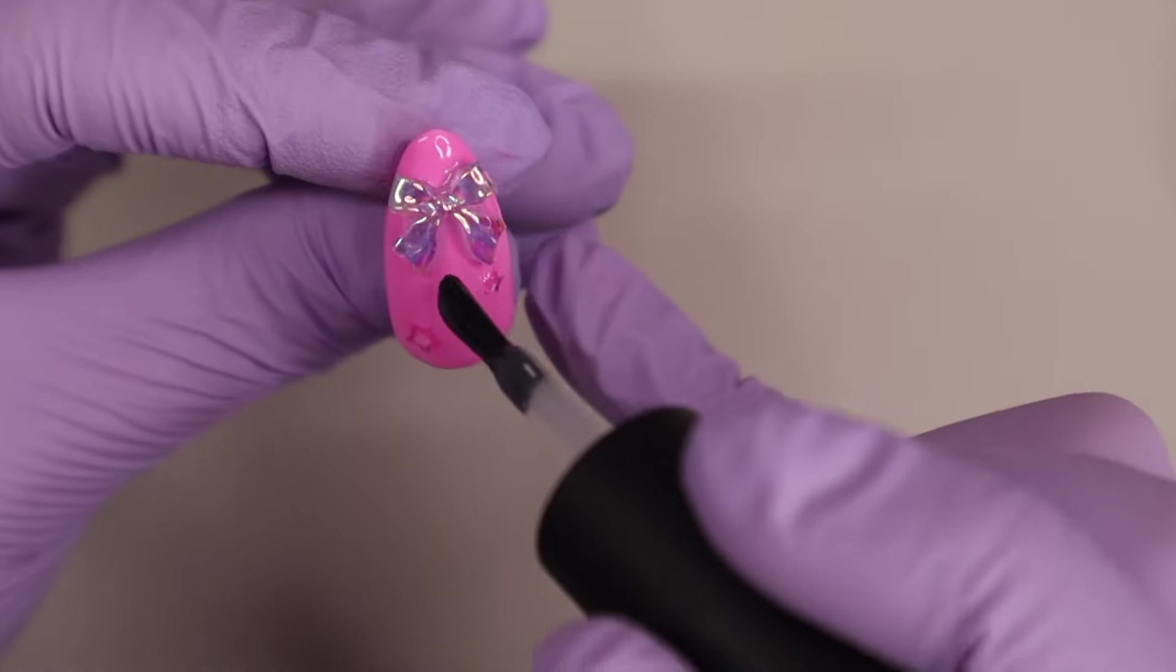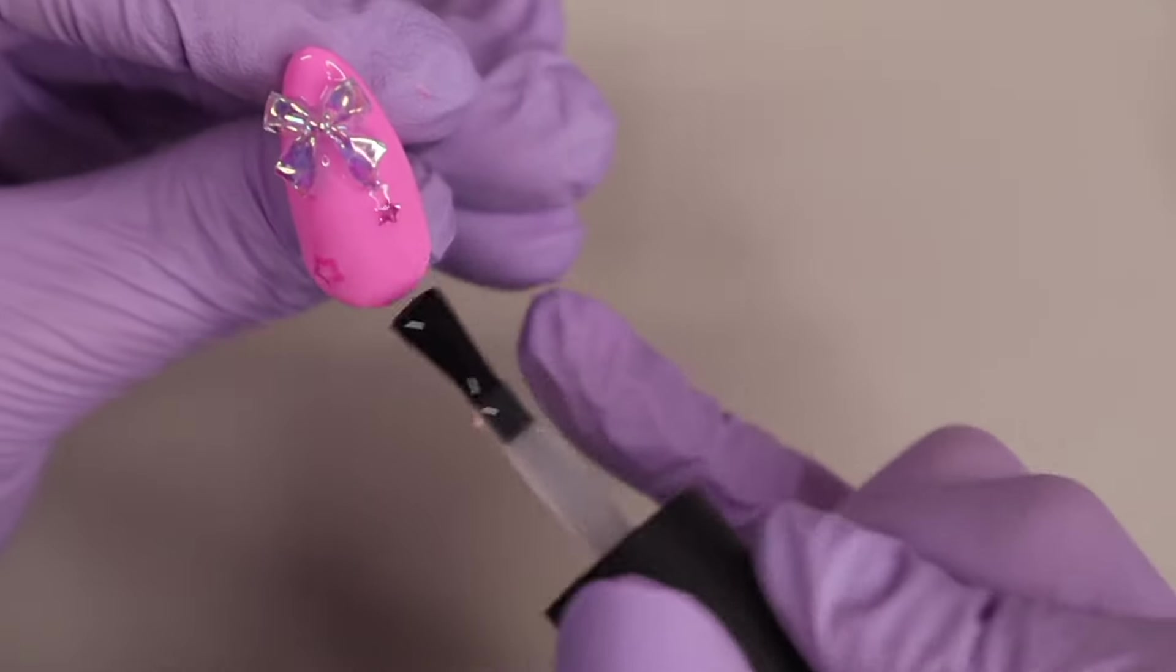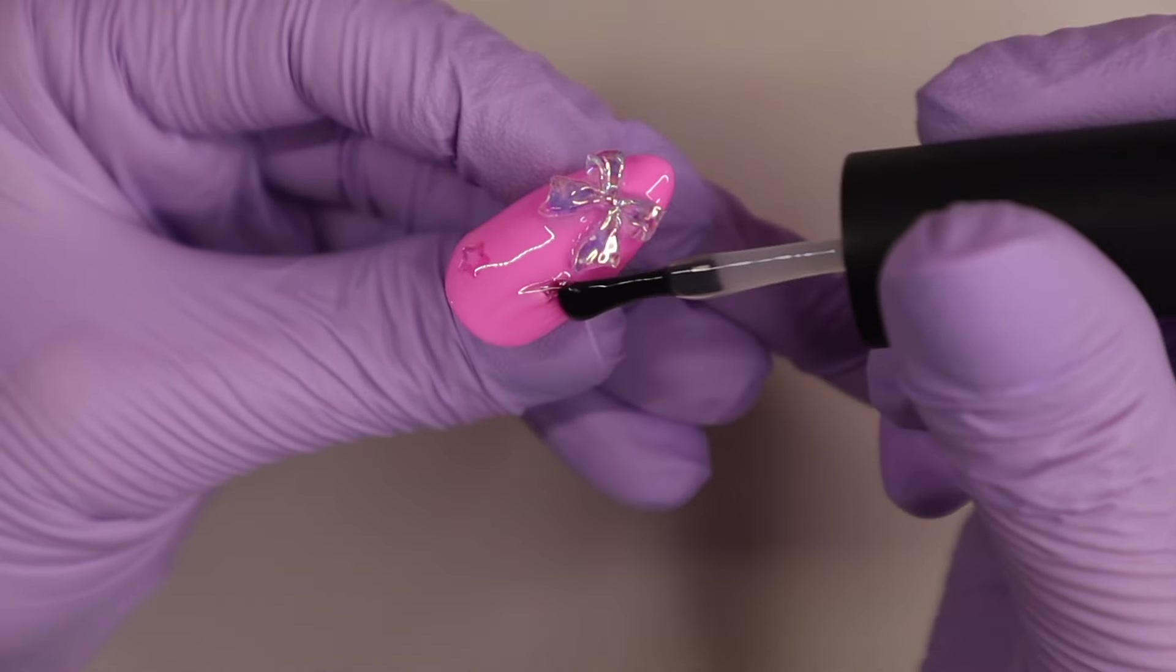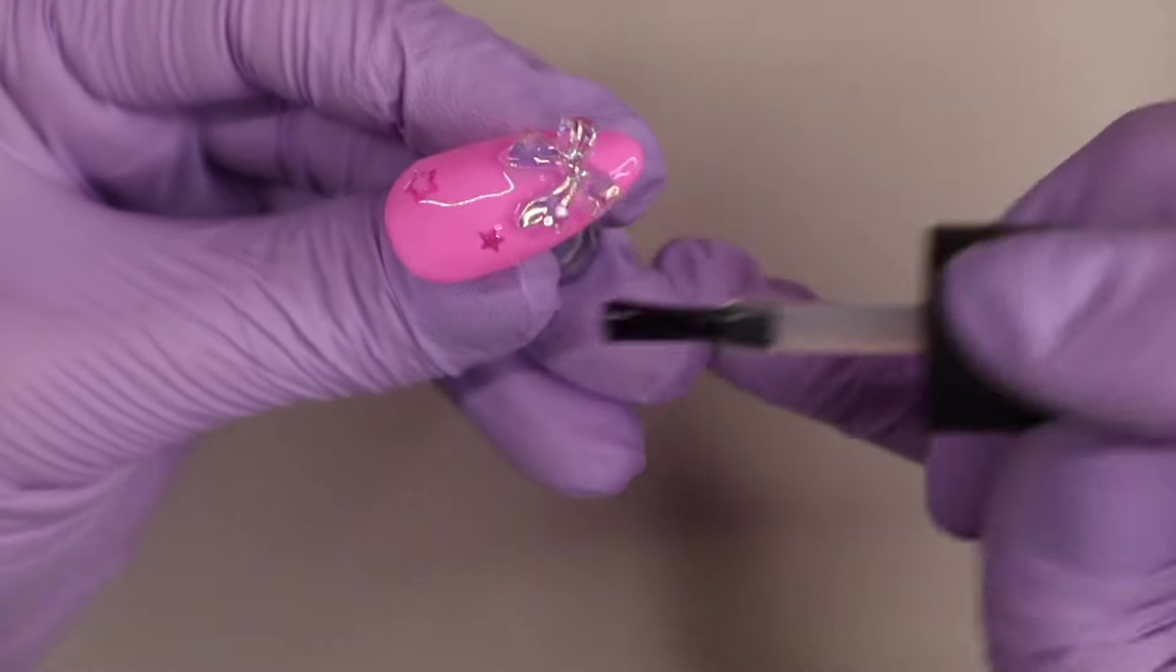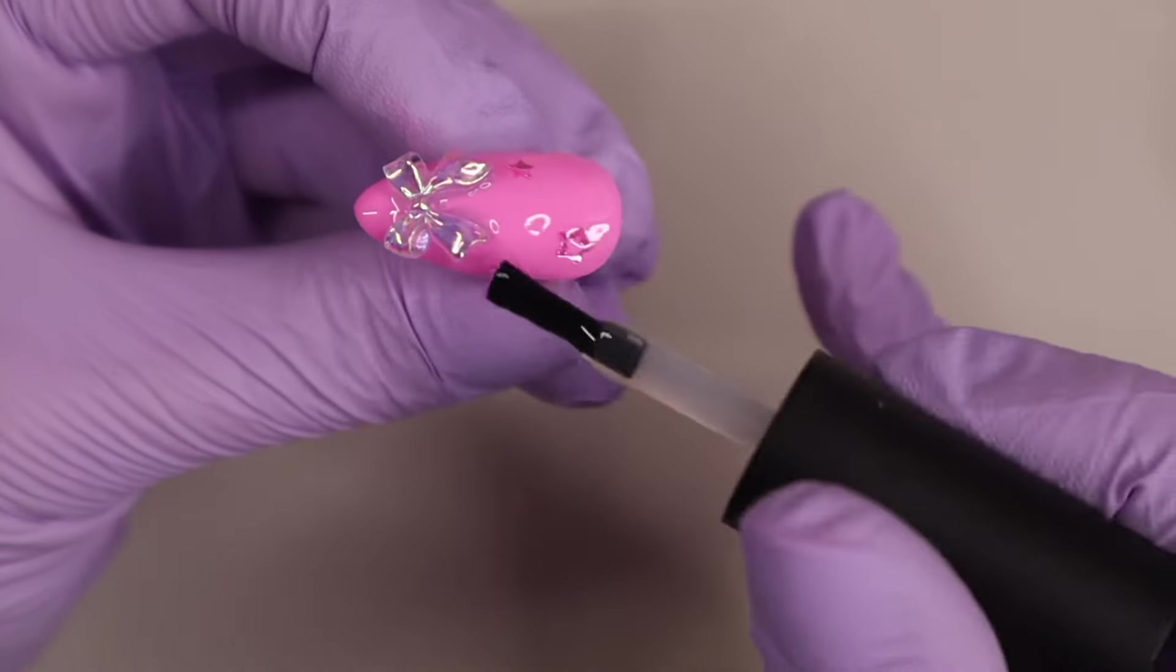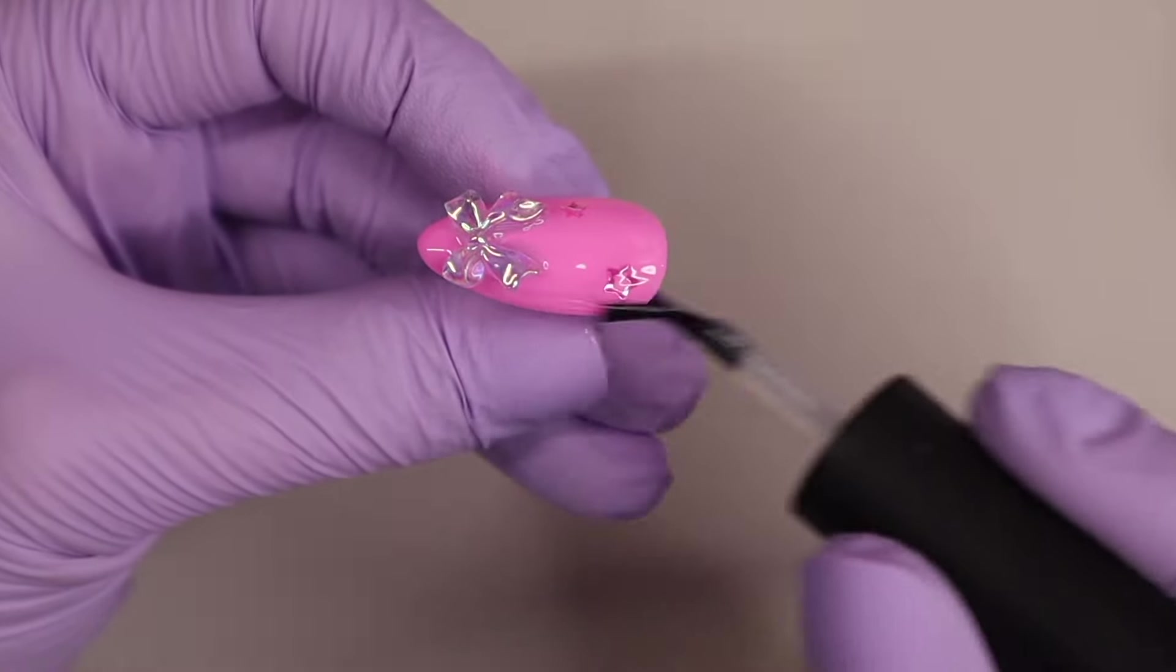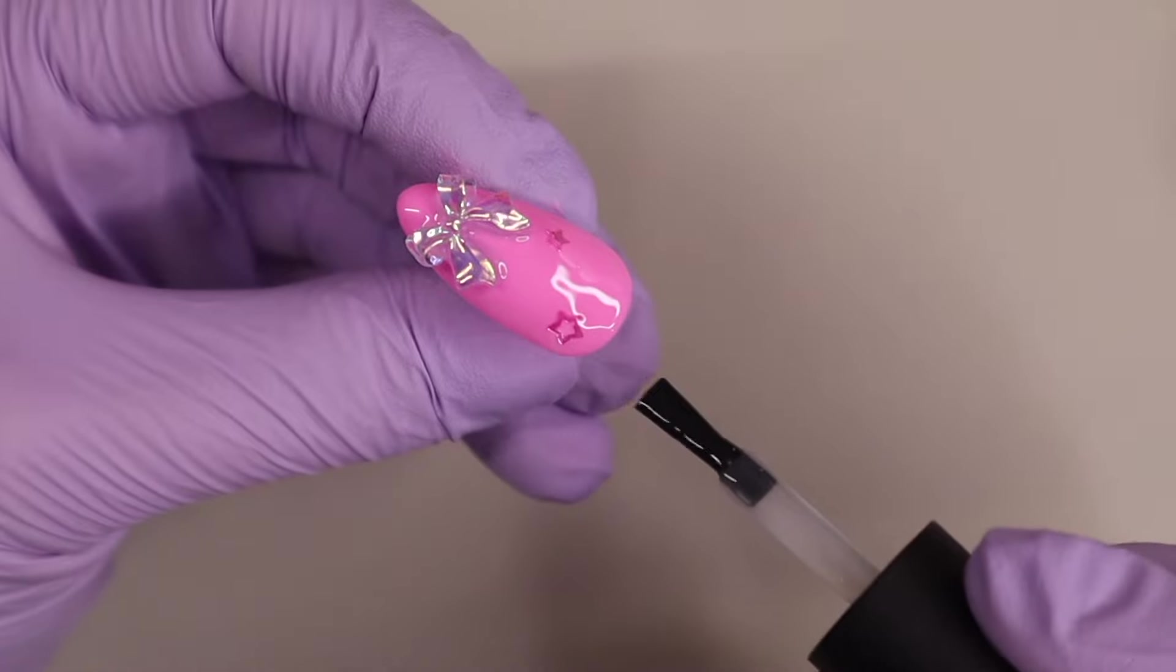To finish off these nails I am taking the Beetles no wipe top coat and doing a nice even layer on all of the nails. This is actually my favorite no wipe top coat to use on my press-on sets because I really like the viscosity of this. It's not too thick and it's not too thin and runny so I just feel like it's a good consistency for what I like in a top coat.